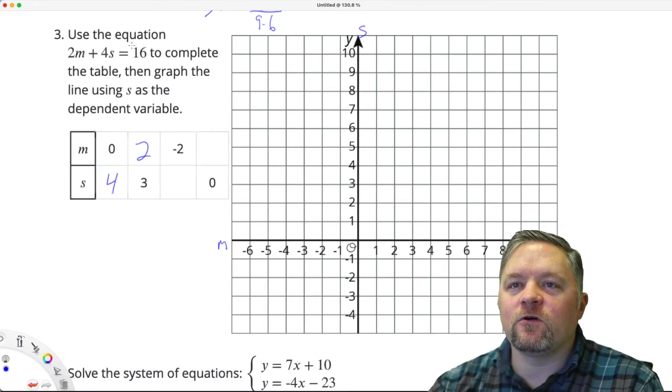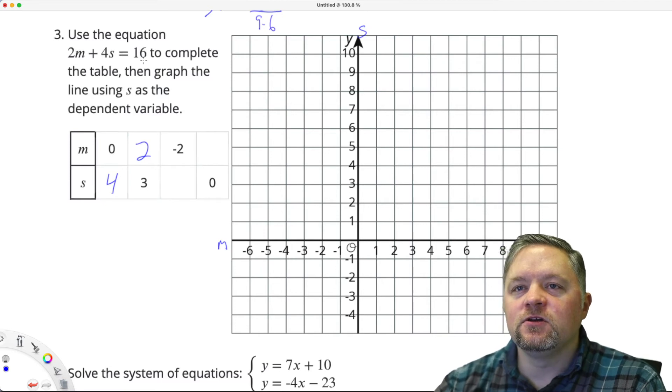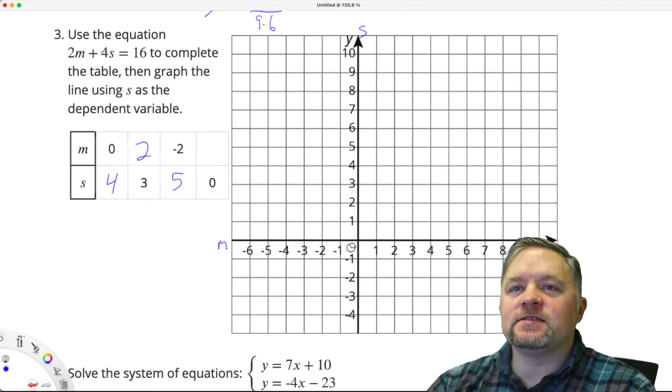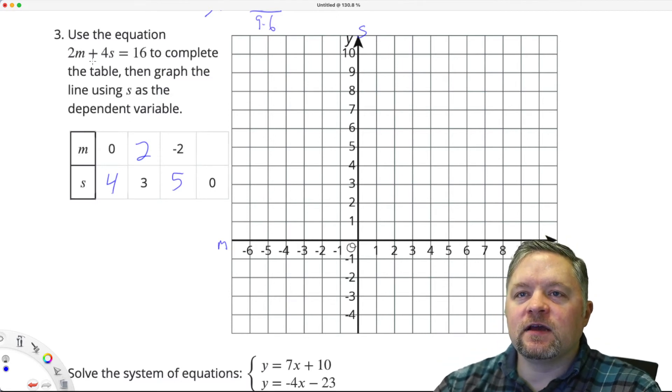And then 4s equals 20. 4 times what is 20? 5. Now, if S is 0, that goes away. 2 times M equals 16. That is 8.